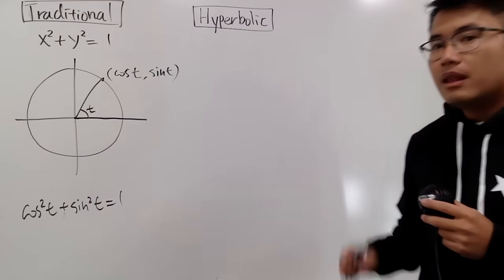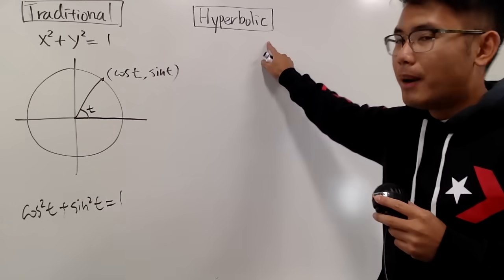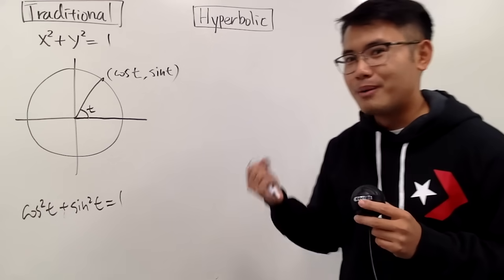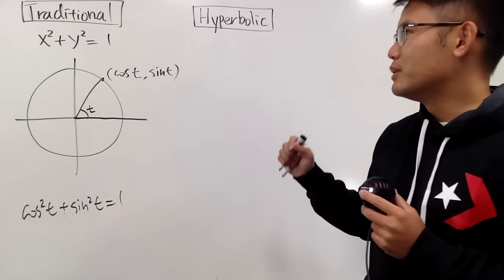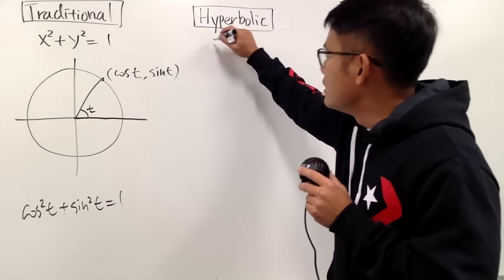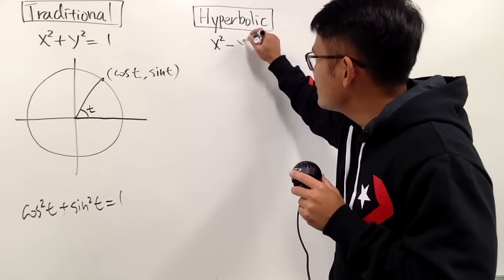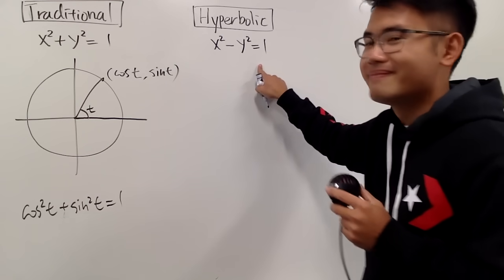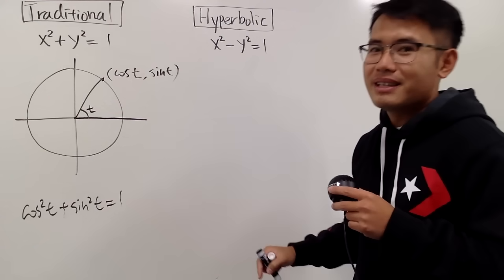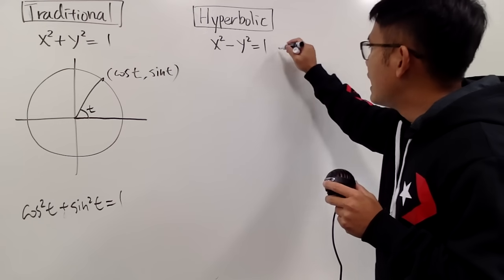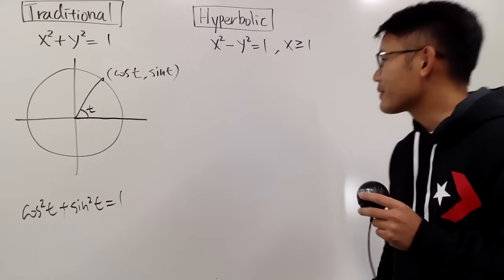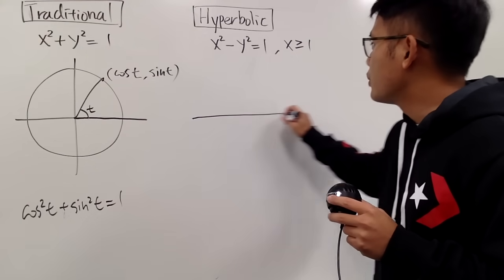Now for the hyperbolic ones, instead of using a circle, we will just be using a hyperbola — specifically the right branch. So the equation we'll be using is x squared minus y squared equals 1. I just changed the plus to a minus. I want x to be greater than or equal to 1, technically speaking. Let's draw a picture real quick.